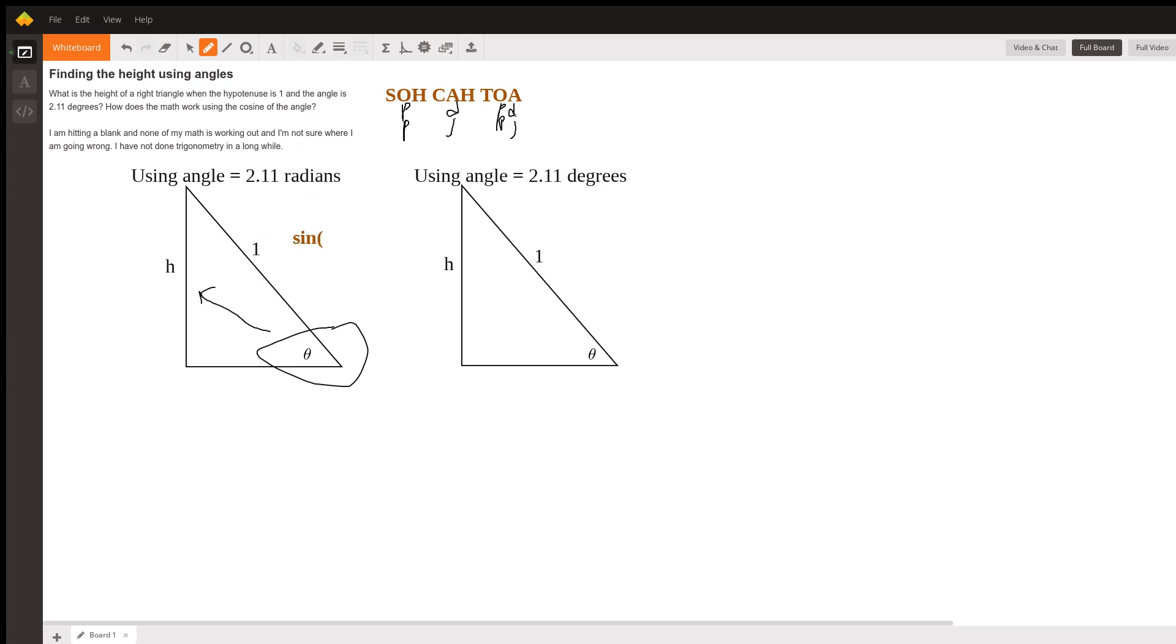Sine of theta, which is 2.11, equals h over 1. So on our calculator in the radians mode, not degrees, I'm going to type in the sine of 2.11 and I get that the height is 0.858, whatever the units are.